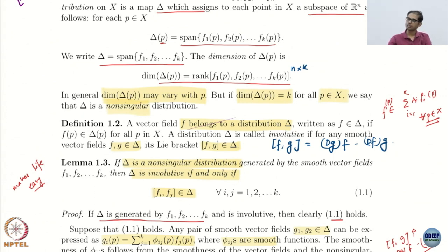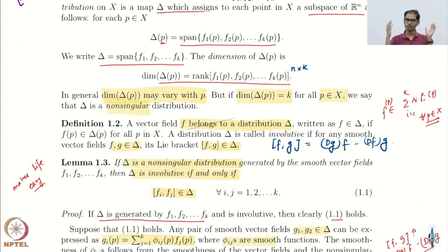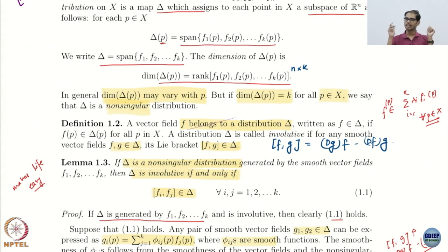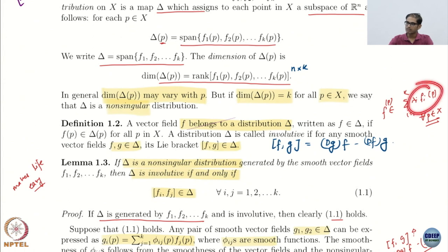Entire results on controllability are based on involutive distributions. Once again, I told you earlier — that was very vague because we did not prove anything. But you do not just move along linear combinations of the control vector fields — you also move along Lie brackets of these.